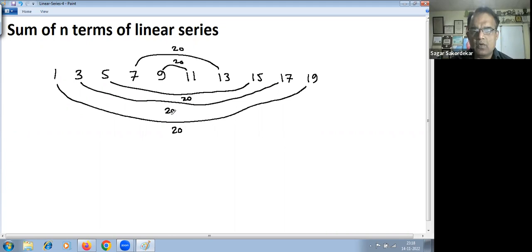So if you just check here: 1, 2, 3, 4, 5. Five times 20. So sum of this series or sum of this first 10 terms is 5, that is total number of sets here, into 20, which is 100.